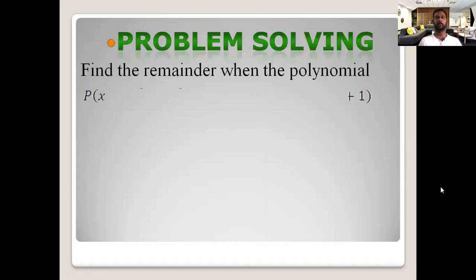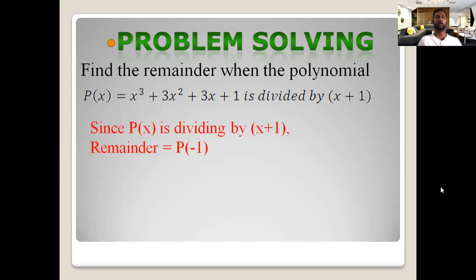Find the remainder when the polynomial p(x) equal to x³ plus 3x² plus 3x plus 1 is divided by x plus 1. Since p(x) is divided by x plus 1, equate x plus 1 equal to 0, which gives x equal to minus 1. Therefore the remainder is equal to p(minus 1).